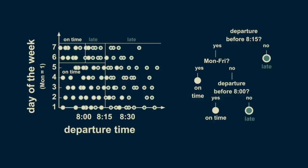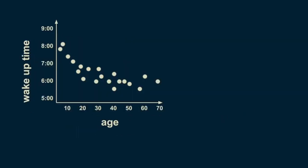Now we can look at an example with a continuous target variable, rather than a categorical one. When a model is used to make predictions about continuous numerical variables, it's also called a regression tree. So far, we have looked at one- and two-dimensional classification trees. Now we'll look at regression trees. Let's consider the question of what time someone wakes up, as predicted by their age. The root of our regression tree is an estimate for the entire dataset. If you had to make an estimate without knowing someone's age, a reasonable guess would be 6:25. This is the root of the decision tree.